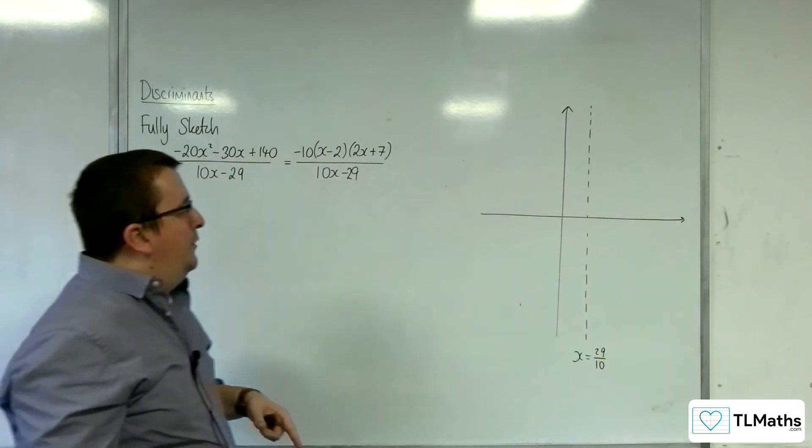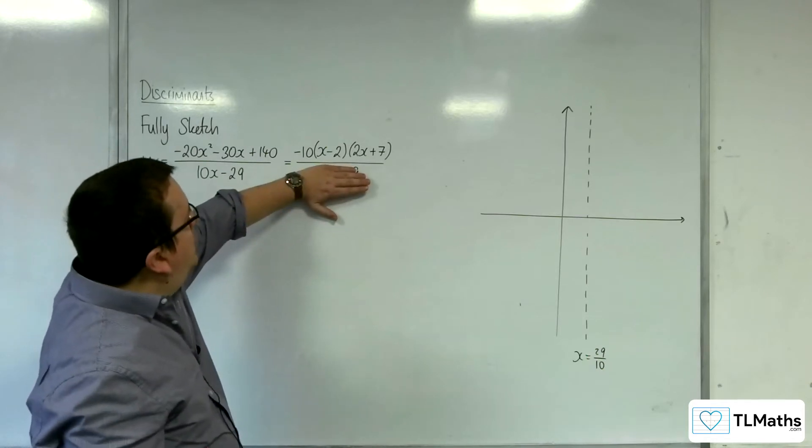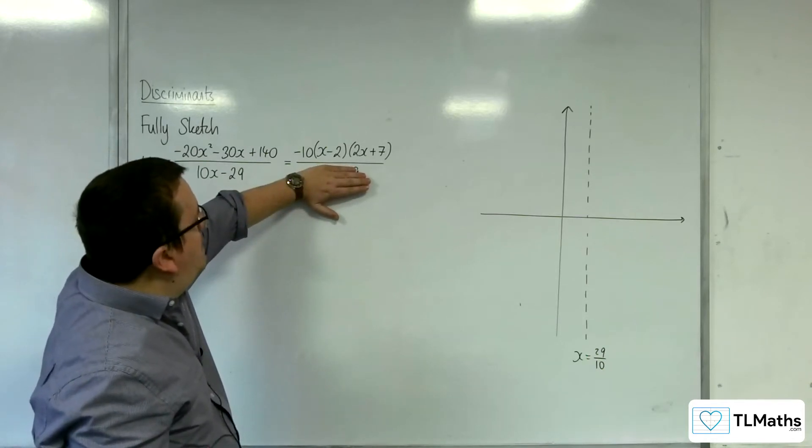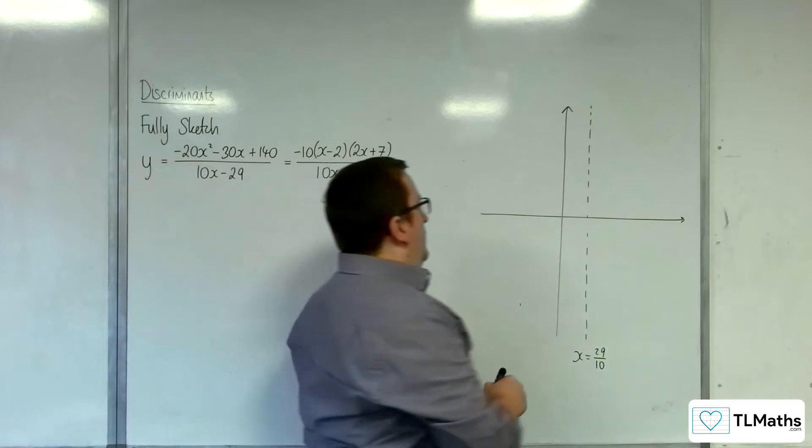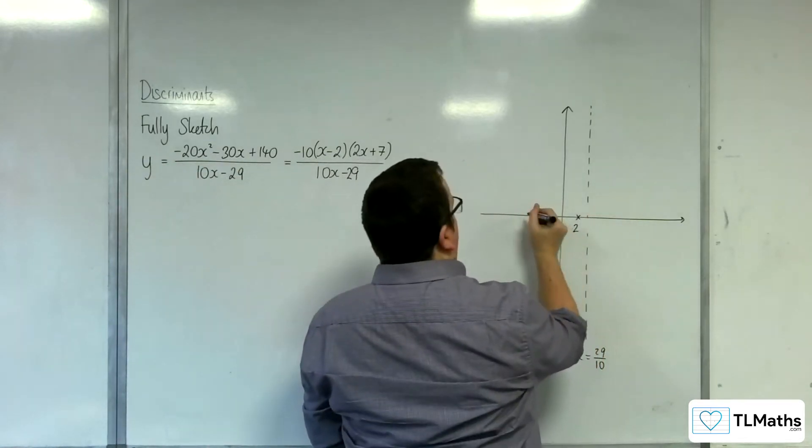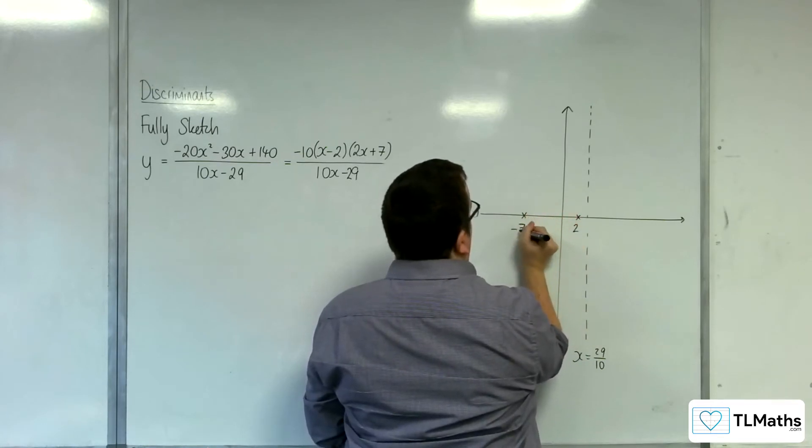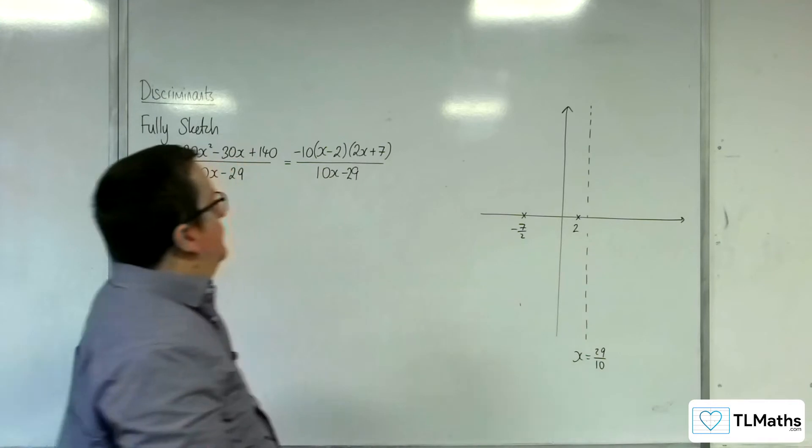Where is it crossing the x-axis? That's when the numerator is 0. So, that will be at 2 and at minus 7 halves. So, 2 and minus 7 halves, so minus 3.5.